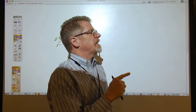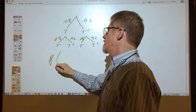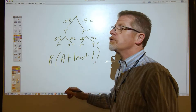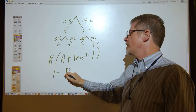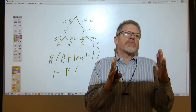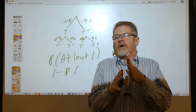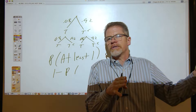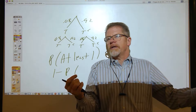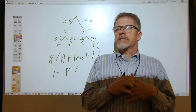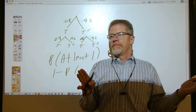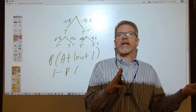You'd end up with 10 layers if you kept drawing the tree diagram for 10 people. Two to the tenth is 1024 leaves. The question is: what's the probability that at least one person trusts Congress? The probability of 'at least one' can be rewritten as 1 minus the probability of the complement. The complement of 'at least one trusts Congress' would be zero people trusting Congress.